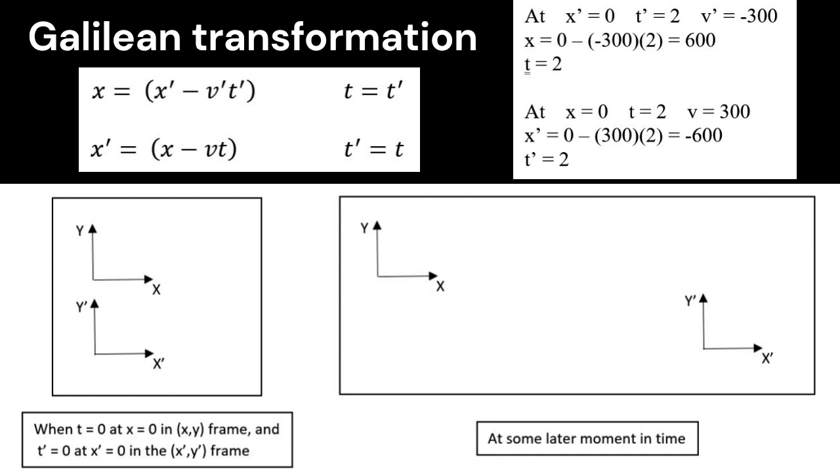Conversely, when you plug in the other equation, the second equation, x prime equals x minus vt. Well, for the tower, at x equals 0, at time equals 2, the velocity of the airplane is 300, plus 300, away from it.